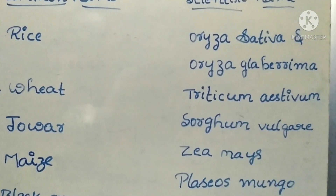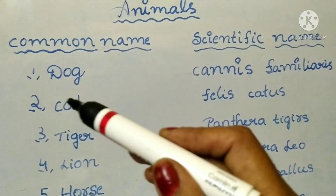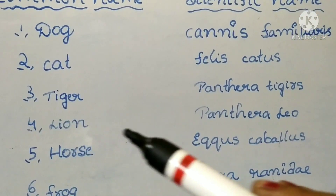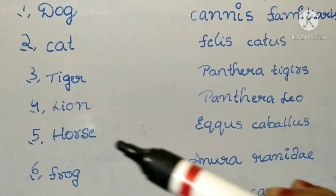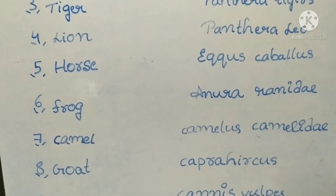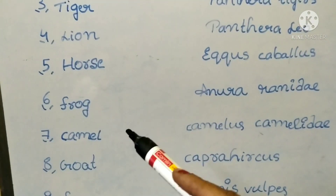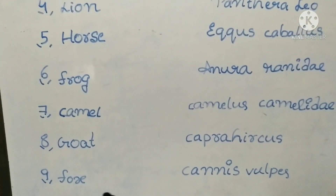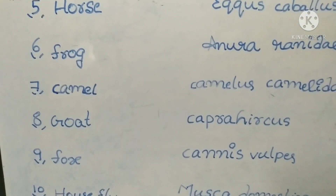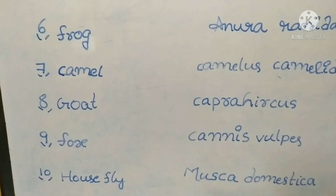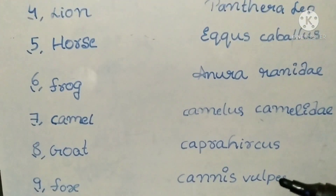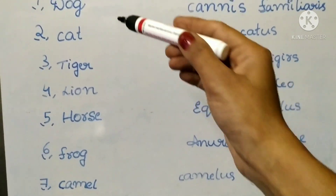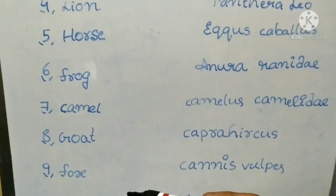Next, animals and their scientific names. Dog — Canis lupus familiaris. Cat — Felis catus. Tiger — Panthera tigris. Lion — Panthera leo. Horse — Equus caballus. Frog — Rana tigrina. Camel — Camelus dromedarius. Goat — Capra hircus. Fox — Canis vulpes. Housefly — Musca domestica. Friends, this is very important. These are going to be asked in CHS exams. Dog, cat, tiger, lion, horse, camel, and housefly scientific names are very important.